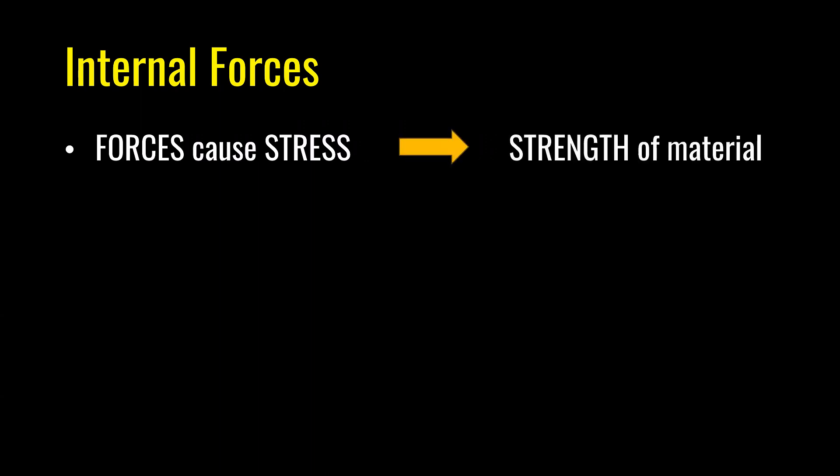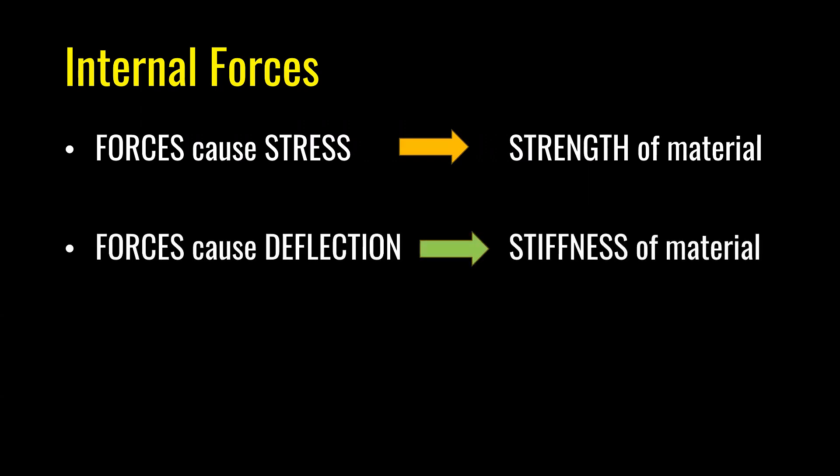The structure transfers loads by internal forces that are in the structure. These forces cause stresses in the material, and this depends on the strength of the material. These forces cause deflections as well, and this depends on stiffness of the material. Strength refers to the material's ability to resist external loads without permanent deformation or failure, ensuring safety and load-carrying capacity, while stiffness measures its ability to resist deformation under these loads, critical for maintaining structural integrity and preventing excessive deflection.